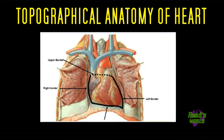There are four borders, and these four borders separate the surfaces from the heart. The four borders are your right border, left border, upper border, and inferior border. The upper border is also known as the superior border. The right border is formed by the right atrium, and the inferior border by the left and right ventricle. The superior border is formed by the right atrium, left atrium, and the great vessels. The left border is formed by the left ventricle and some of the right atrium.